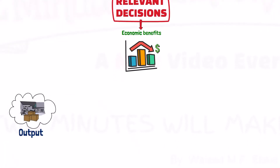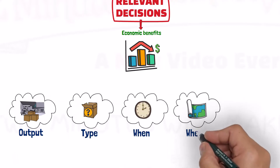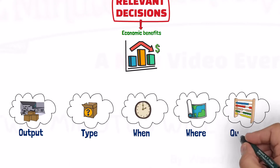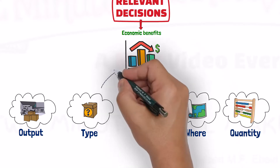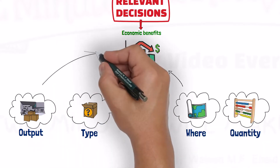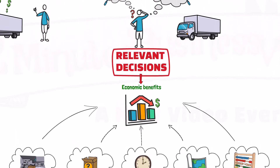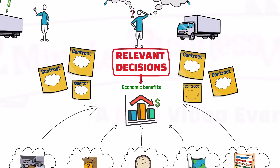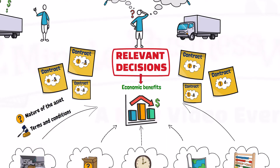Deciding about whether to produce the output, and of what type, when, where, and how much to be produced from that output, are examples of the decisions that affect the economic benefits to be derived from the asset. Relevant decisions may vary between different contracts depending on the nature of the asset and the terms and conditions of the contract.